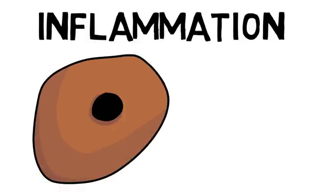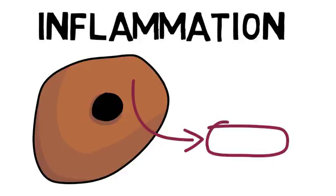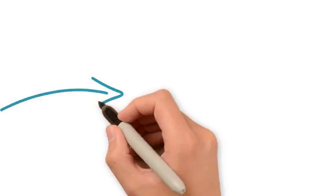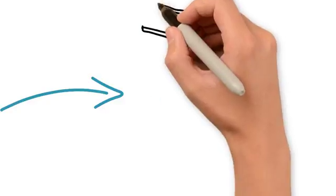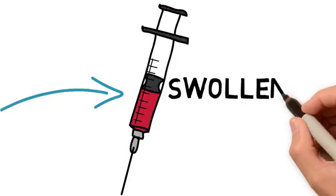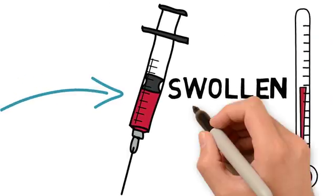Then there's inflammation. This is where infected cells secrete this chemical known as histamine. Histamine causes the blood capillaries in the infected area to dilate. This brings in more blood and also more infection-fighting white blood cells. The area becomes swollen, hot, red and very painful.